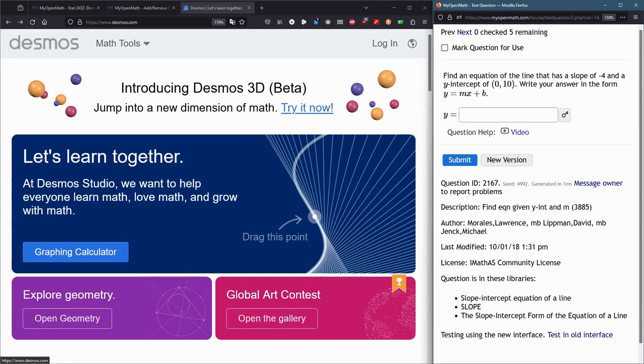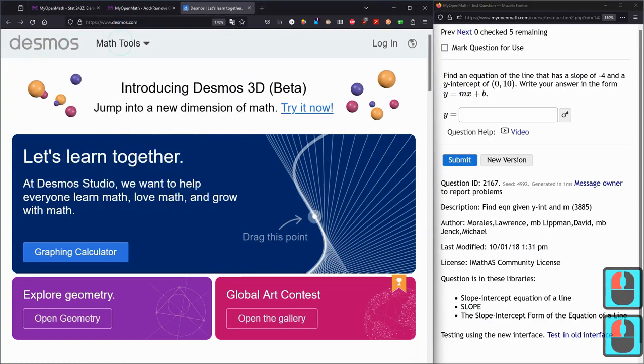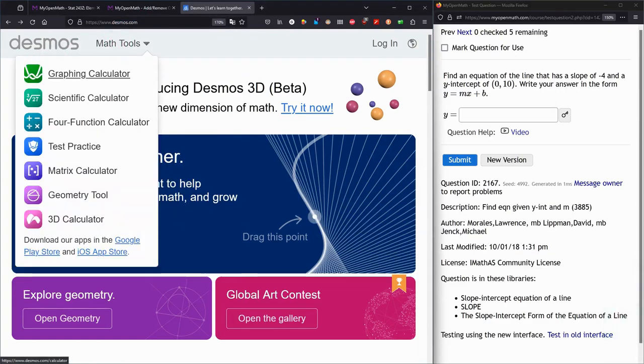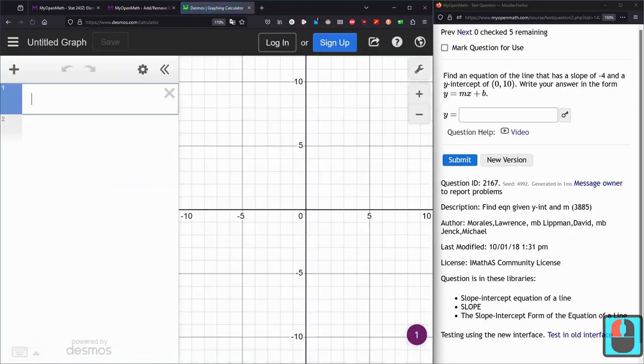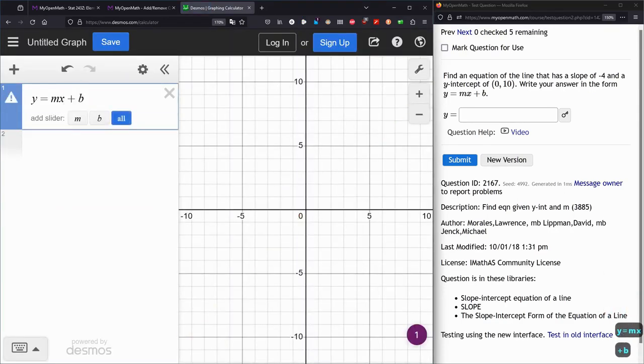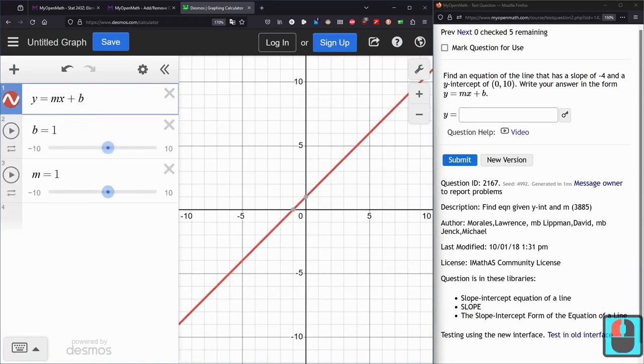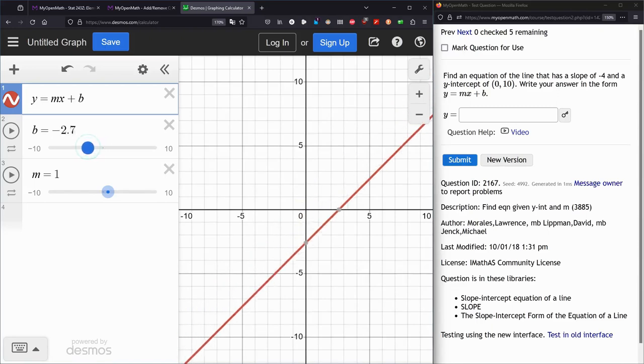To graph, I'm using Desmos. You go to desmos.com and click on Math Tools, Graph and Calculator. I'm just going to type y equals mx plus b. Now, m and b need to be numbers. x is the coordinate on the x-axis, y is the coordinate on the y-axis. m and b are going to be numbers. It lets me add a slider for m and for b, and I can adjust these.